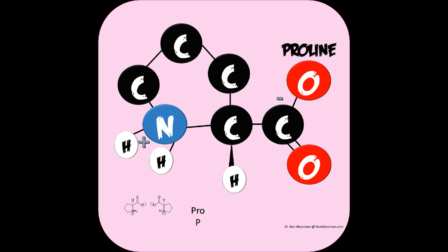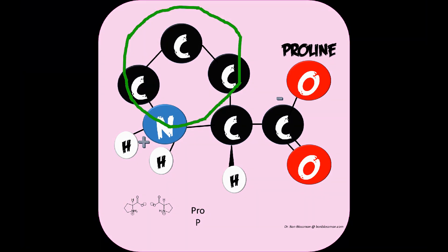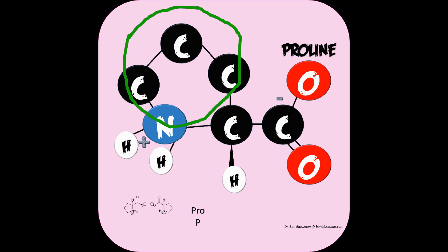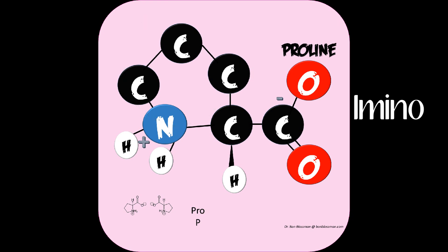The next unique amino acid is proline. Proline doesn't really have an R-chain; rather, the R-group folds back and bonds upon itself. The actual R-group is a CH2-CH2-CH2 linked to the nitrogen in the amino group. So proline is not an amino acid — it is an imino acid — because we have changed the nitrogen group.